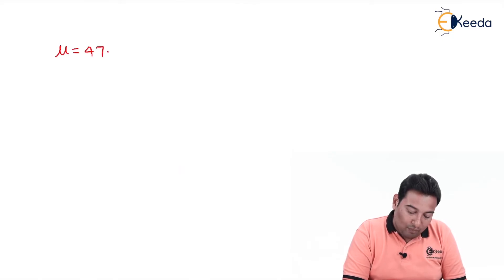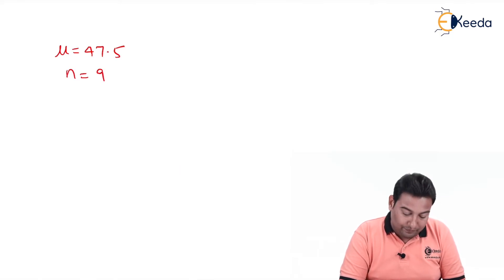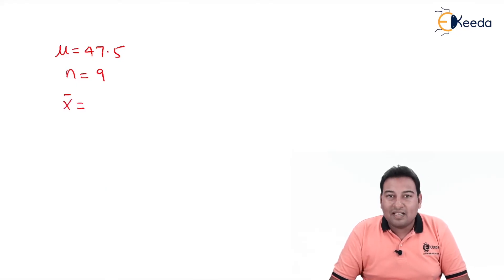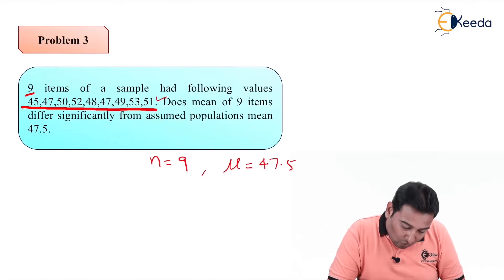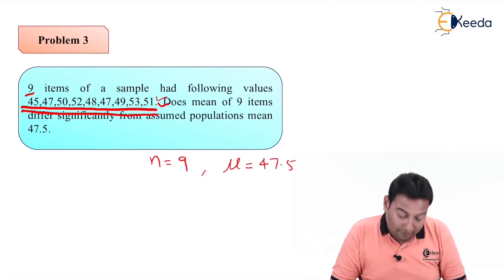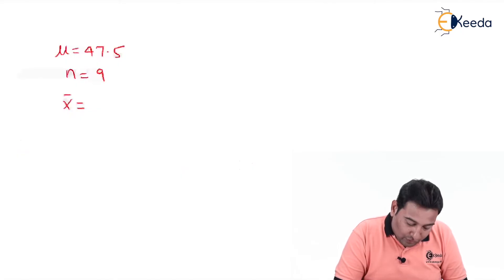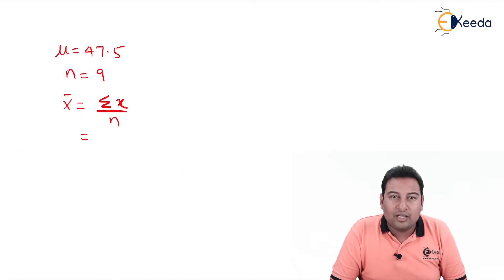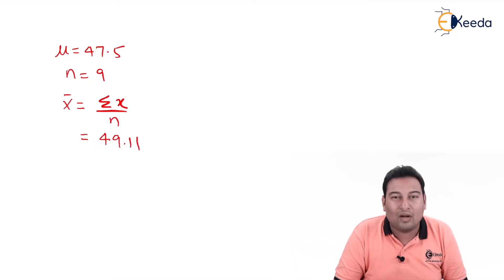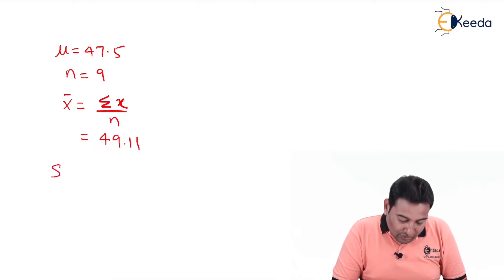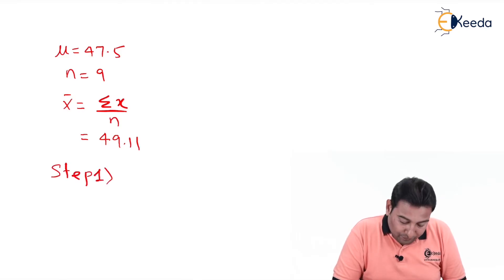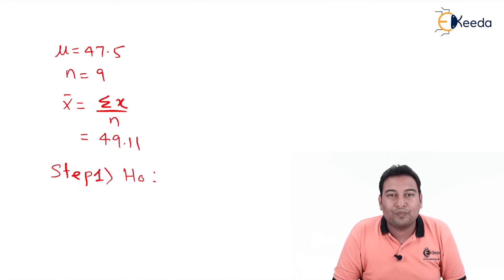The assumed population mean μ is equal to 47.5, and n is equal to 9. Now, x̄ is not mentioned here, but x̄ is the mean of the sample. So we need to add all nine values — 45, 47, 50, and so on up to 51 — and divide by n, that is 9. That gives us summation of x upon n, which equals 49.11.